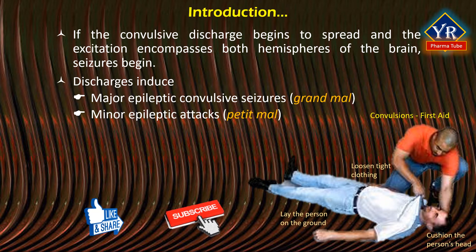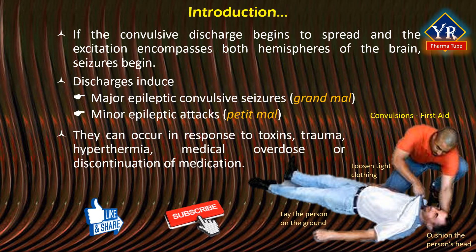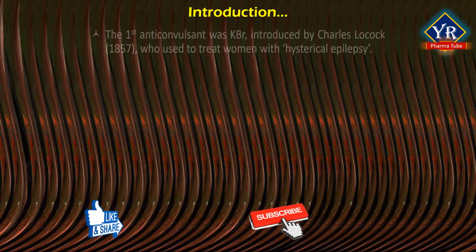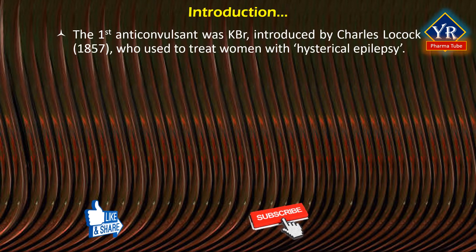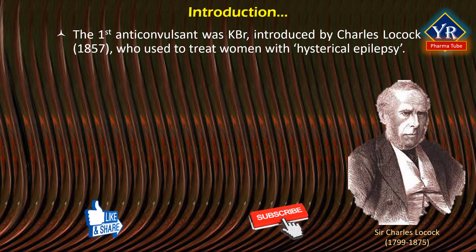Generally speaking, seizures are involuntary muscle contractions that can take place as a result of pathologic processes both inside and outside of the brain. They can occur in response to toxins, trauma, hyperthermia, medicinal overdose, or upon discontinuation of medication. The first effective anticonvulsant was potassium bromide, introduced by the British gynecologist Charles Lowcock in 1857, who used bromide to treat women with hysterical epilepsy.